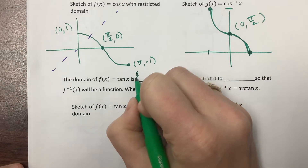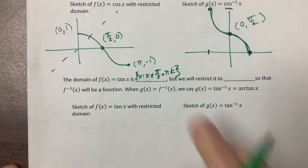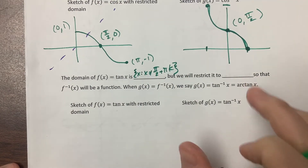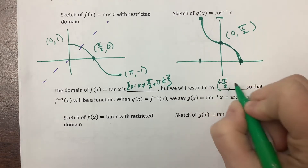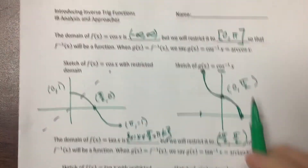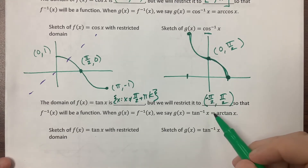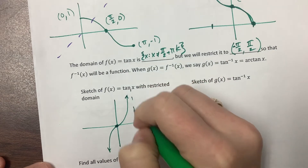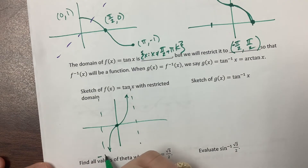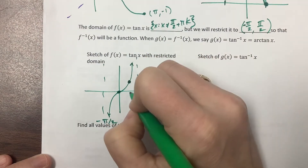For tangent: the domain is everything but the asymptotes — x such that x is not equal to pi over 2 plus pi·k. It has infinitely many intervals, but we restrict to just the one that includes zero: negative pi over 2 to pi over 2, with open brackets because at negative pi over 2 and pi over 2 we have asymptotes. So the graph has zero zero in the middle approaching asymptotes on each side.